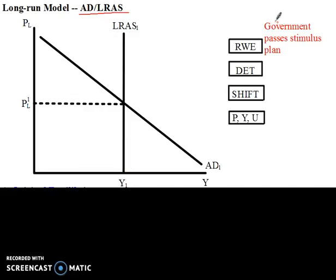Over here on my model I have my real-world event, my determinant, the shift in the curve, and then there are three variables I'm going to try to predict — the three main variables in macroeconomics: the price level, real gross domestic product, and the rate of unemployment.